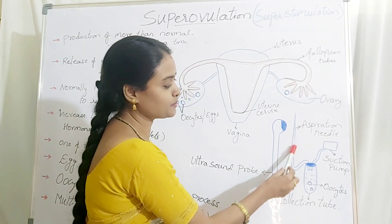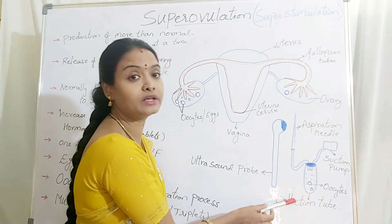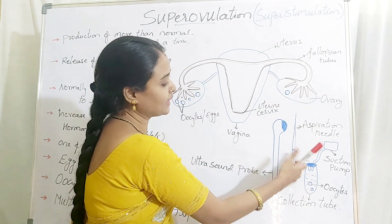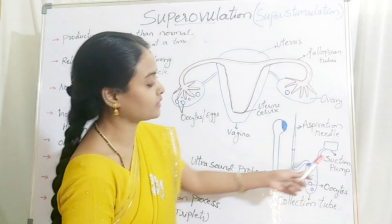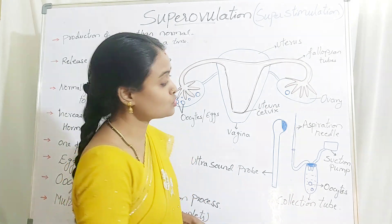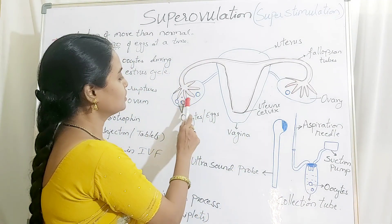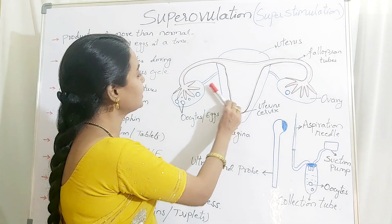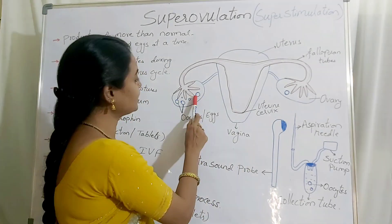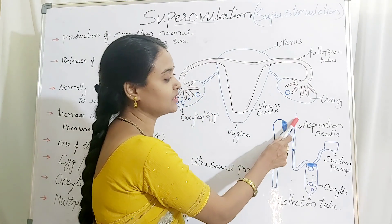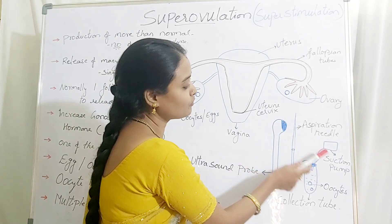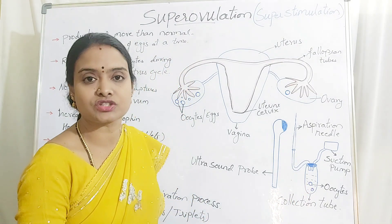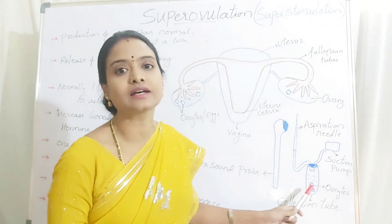The aspiration needle is connected to the collection tube. When you aspirate, that means you are going to suck it out using a suction pump connected to the collection tube. They observe the oocytes using the ultrasound probe by introducing it inside, and then the oocytes are aspirated with the aspiration needle. When the suction pump is on, they are sucked inside and collected in the collection tube.